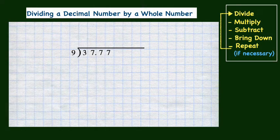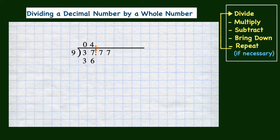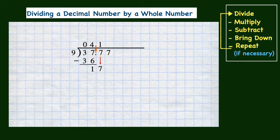I chose to show you this division problem next because the quotient will have a repeating digit. The divisor, again, is a whole number, and we start by bringing the decimal point from the dividend up to the quotient. Now we can divide. Nine divides into three zero times. Looking at the next digit of seven, we have the number 37. Nine divides into 37 four times. Four times nine is 36. Subtracting 36 from 37, you get one. Then we bring down the next digit of seven. Now we have 17 and nine divides into 17 one time. After subtracting nine from 17, we have eight left over.